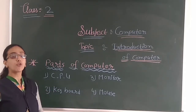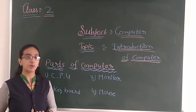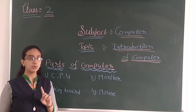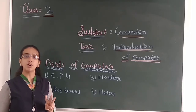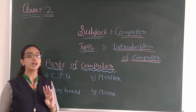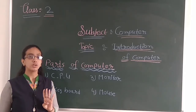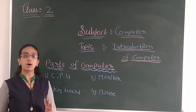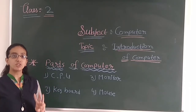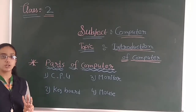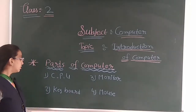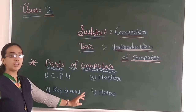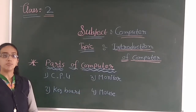There are four parts of computer: CPU, keyboard, monitor and mouse. Now we learn about three of those parts of the computer, which are the CPU, monitor and mouse.